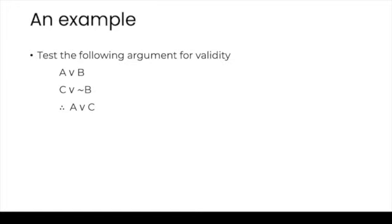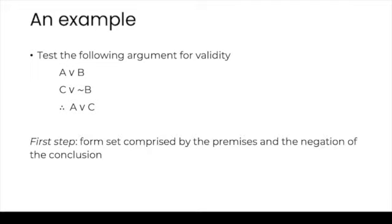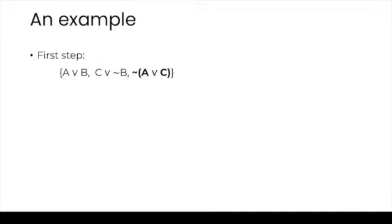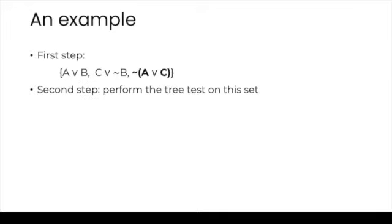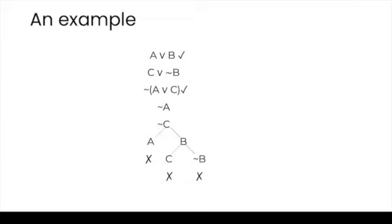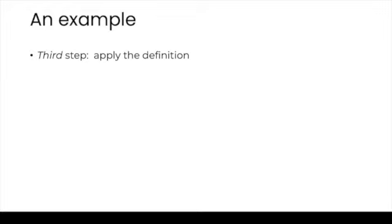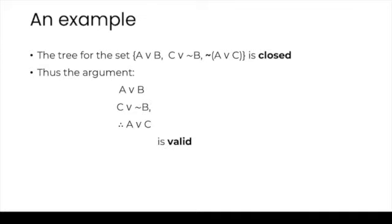We can now give a definition: an argument A is valid whenever the set comprised by A's premises and the negation of A's conclusion yields a closed tree. Let's test an argument for validity. The first step is to form the set comprised by the premises and the negation of the conclusion: A or B, C or not B, and not A or C. The second step is to perform the tree test on this set. We see that all the paths close; therefore, the tree is closed and the set is inconsistent. Applying the definition, the argument is valid.